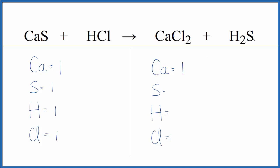Product side, we have the one calcium, the one sulfur, two hydrogen, and then two chlorine atoms.